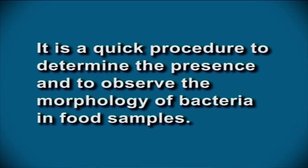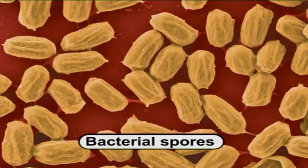Let us learn about simple stain. It is a quick procedure to determine the presence and observe the morphology of bacteria in food samples. A simple staining technique involves the application of one stain, which helps in observing the cell shape and arrangement. However, some samples do not stain with simple stains, for example bacterial spores.